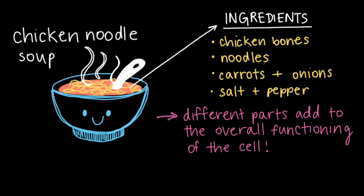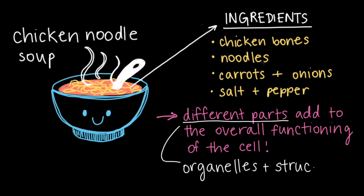To wrap up this video on cell parts, let's revisit our delicious bowl of chicken noodle soup from the beginning. Each ingredient we added had a unique function that contributed to the soup's taste and texture. Similarly, our cell's ingredients — its organelles and structures — each contribute a unique function that helps the cell carry out all the tasks necessary for life. So the next time you find yourself in front of a bowl of noodle soup, just imagine that you're eating one enormous cell. Isn't that something to noodle on?